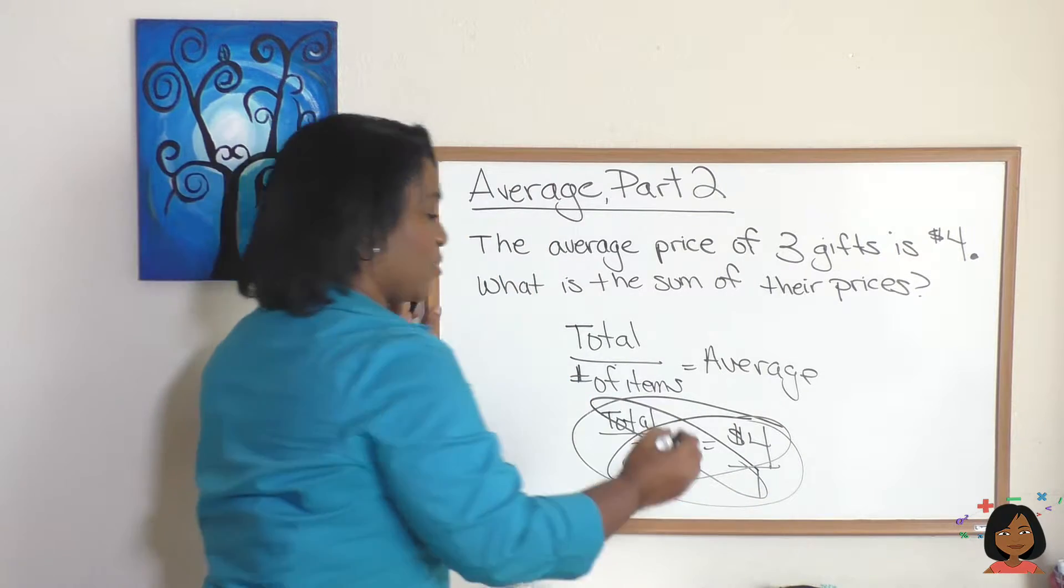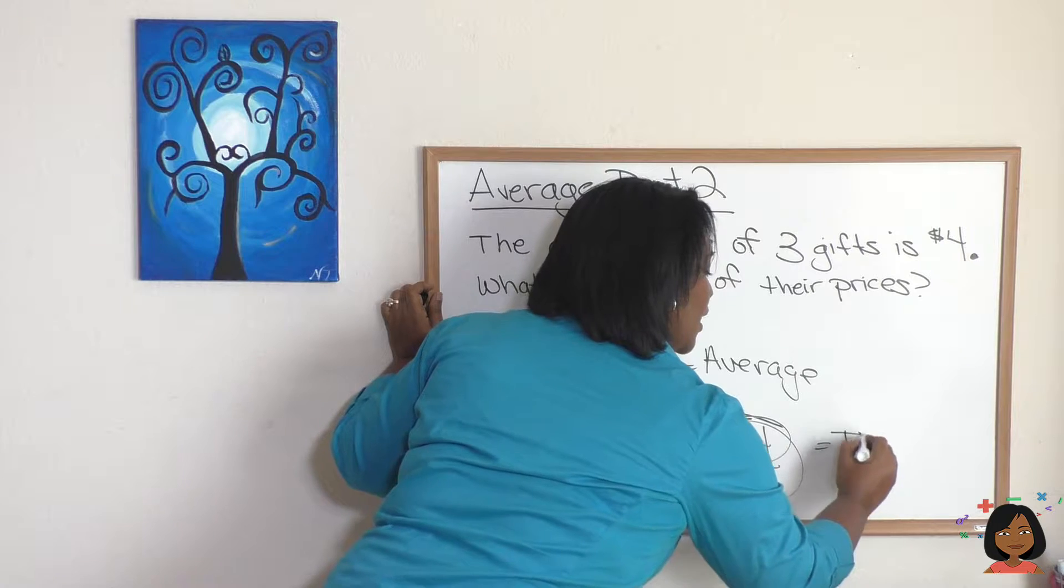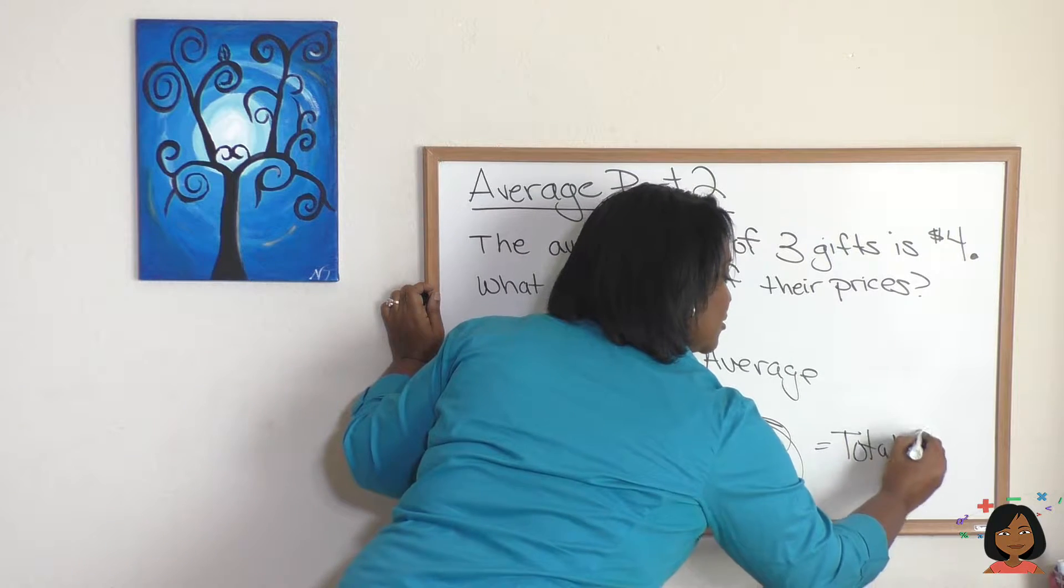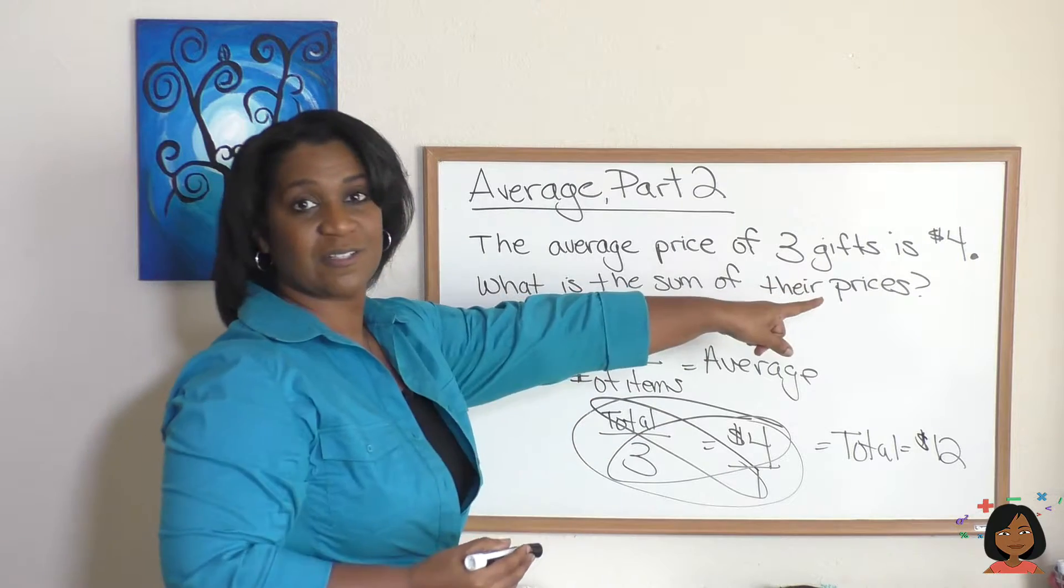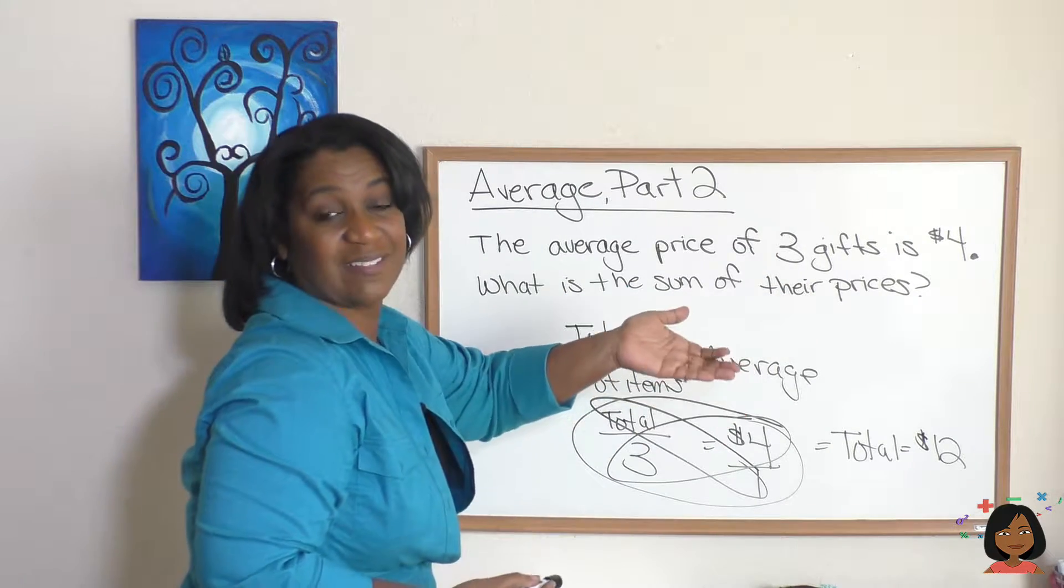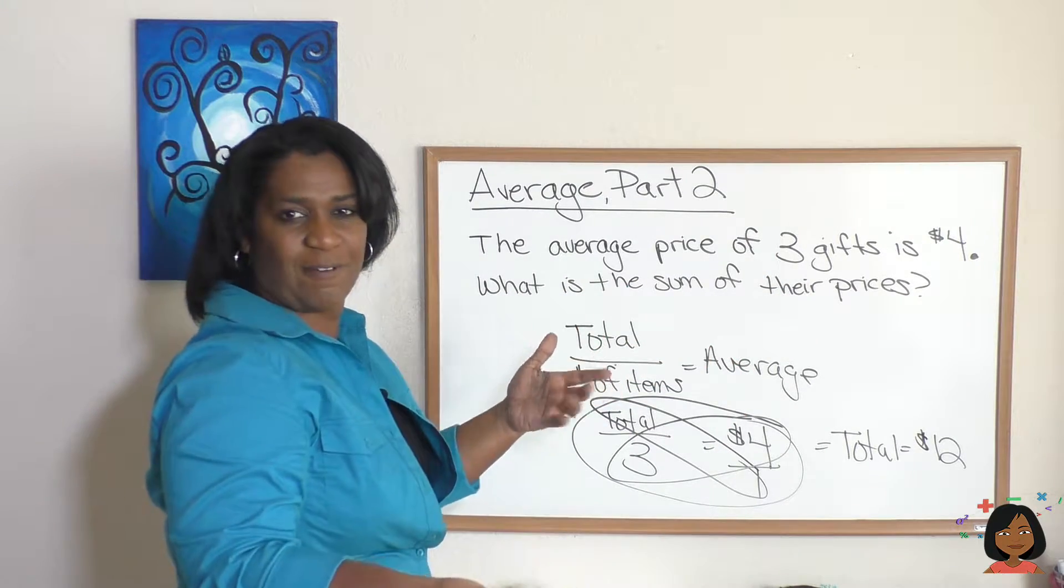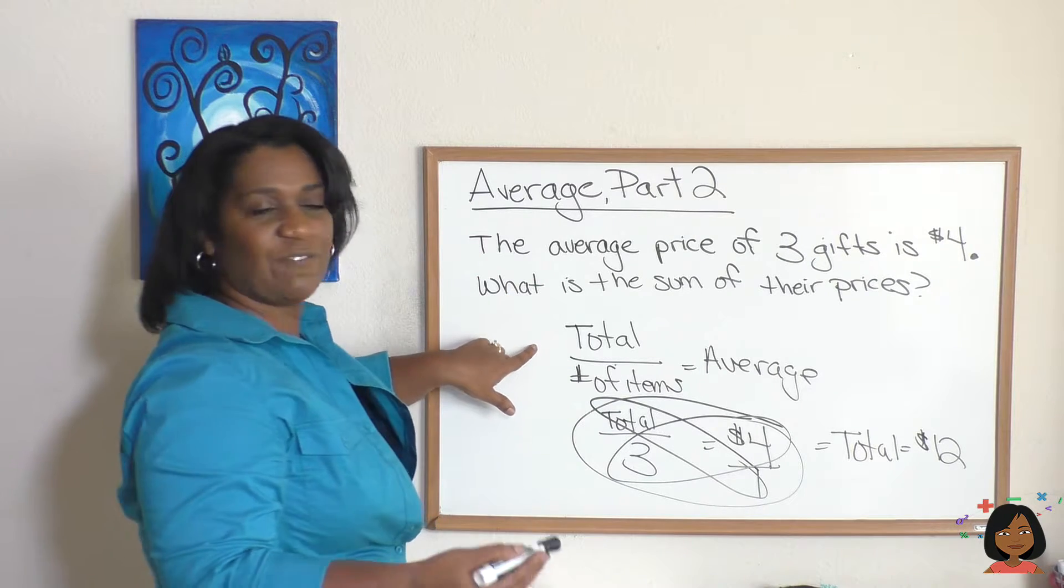Let's cross multiply. So one times our total is, four times three is twelve, so our total is twelve dollars. All we had to do is back it up. Take our four dollars, multiply it by three gifts, and that total was twelve.